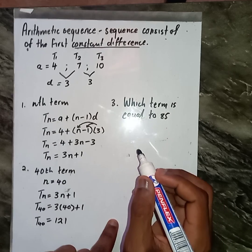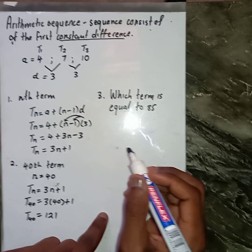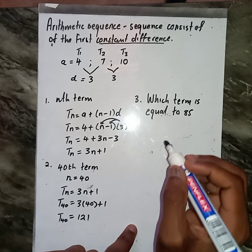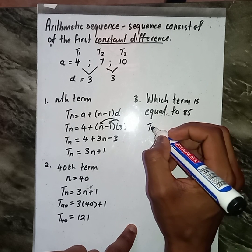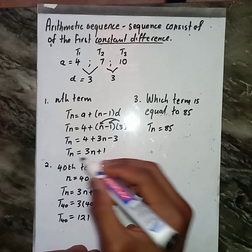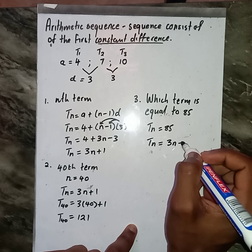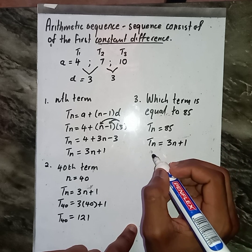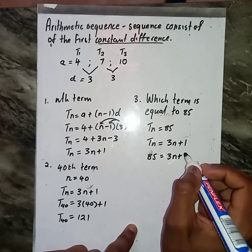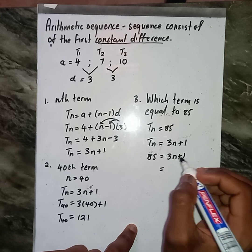How are you going to answer this question? It's so simple. Where we see Tn, we are going to plug in 85. Then, we know that our formula is Tn = 3n + 1. Then, we see Tn, let us plug in 85. We need to transpose 1 for us to solve for n.